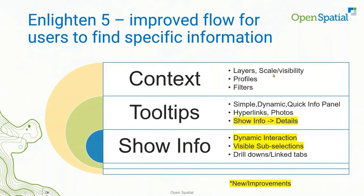What we've had in Enlighten in the past is profiles — a subset of layers saved as a profile that the user can toggle between for different contexts, tasks, or data. There are also filters which reduce the data shown on screen. Tooltips are a really big deal because they make a dynamic interactive map. They can be just one line — in which case the word 'tooltip' is quite correct — or they can be essentially a quick information panel.